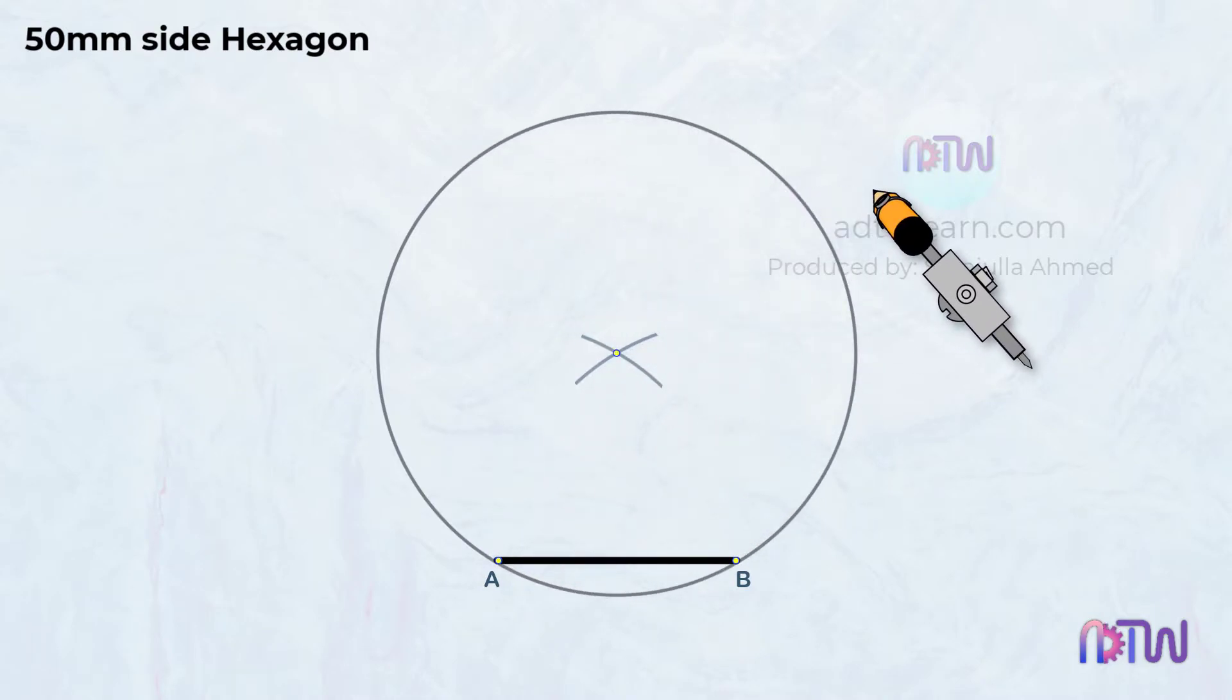Once the circle is drawn, take the same length, and using the endpoints A and B, cut arcs on the circumference of the circle.